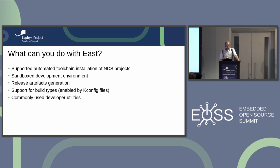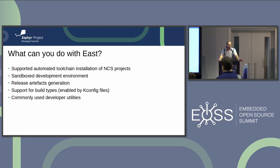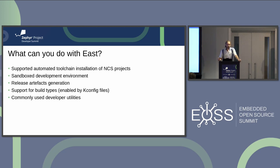Essentially what you can do with EAST: it supports automated toolchain installation of NCS projects. It offers sandbox development environments, it does automatic release artifacts generation, and it has support for build types — I will explain what I mean by this a little bit later. It also includes some commonly used developer utilities, the ones that we found we mostly use all the time.